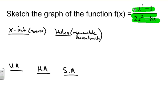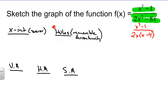First, let's identify if there are any holes. A hole is where we have a common factor. We're going to factor out some stuff here. We have x cubed minus 1 in the numerator, and 2x times (x minus 4) in the denominator. There are no common factors between numerator and denominator, so there are no holes.